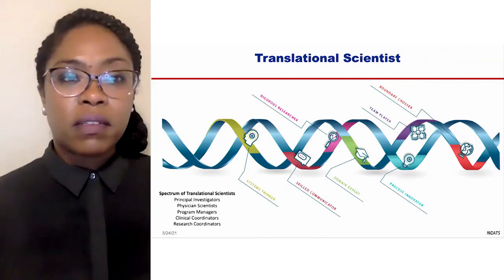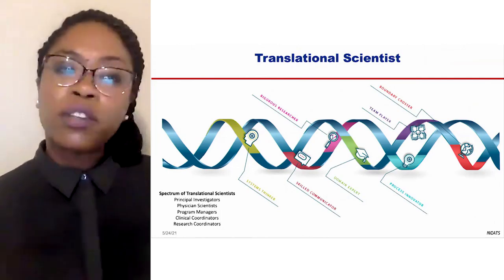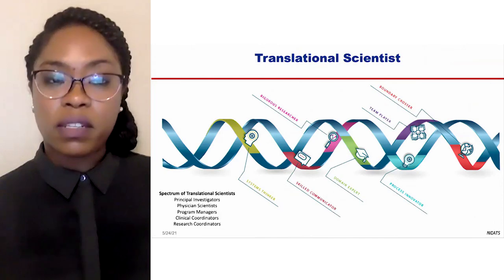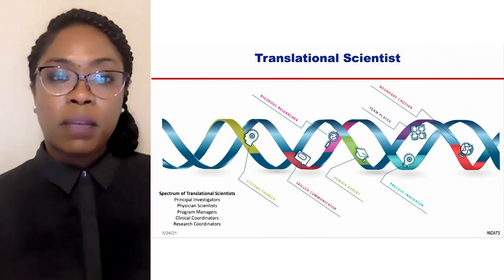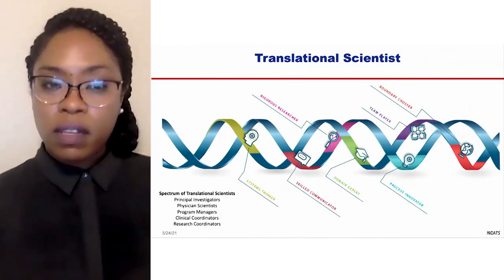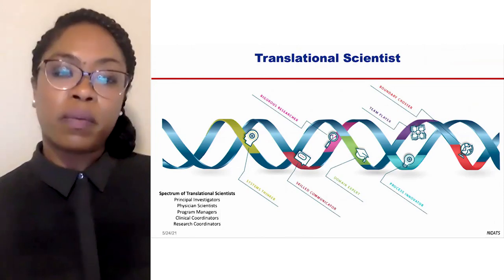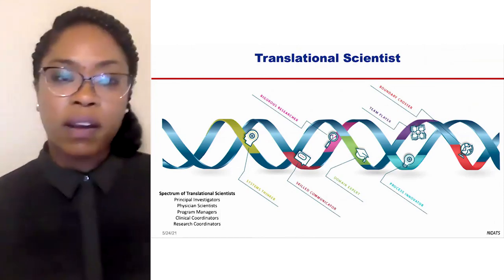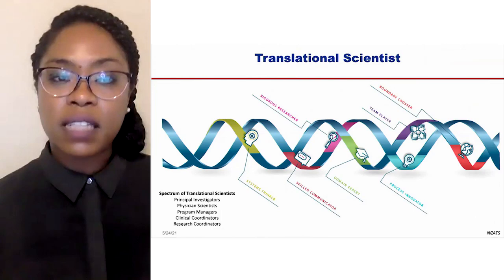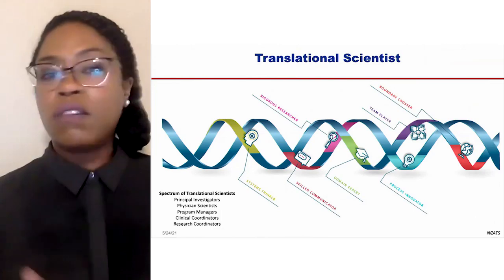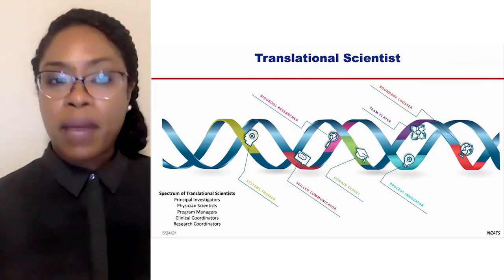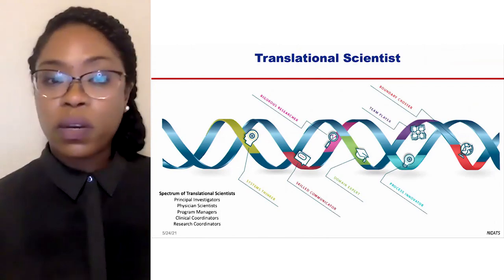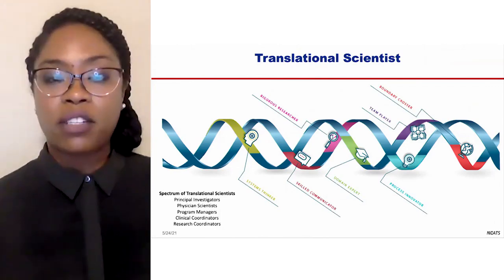The spectrum of translational scientists really is a spectrum — it doesn't exist with any one person, because this process goes over the entire continuum of a candidate into a drug product. It involves principal investigators, physician scientists, program managers, clinical coordinators, research coordinators, and the list goes on. One has to function across multiple teams, be a skilled communicator, be an expert in your domain — in this case influenza — be a team player, be process innovative, and be comfortable crossing boundaries with these novel candidates.